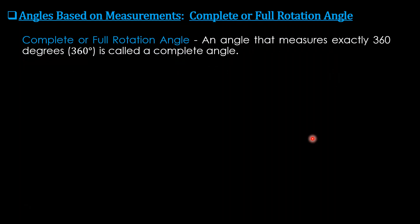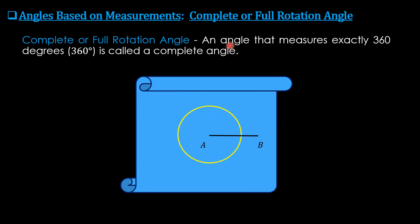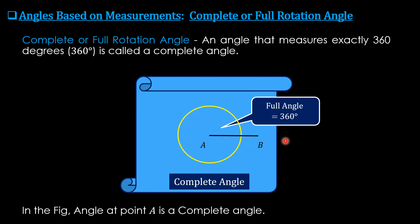A complete or full rotation angle is an angle that measures exactly 360 degrees. The angle around point A is a complete angle of 360 degrees. To recap: 360 degrees is a complete or full angle; 180 degrees is a straight angle; 90 degrees is a right angle; below 90 degrees is an acute angle; above 90 but less than 180 is an obtuse angle; and above 180 but below 360 is a reflex angle.